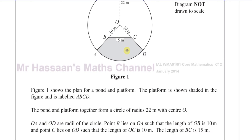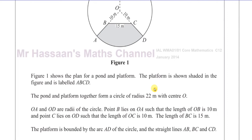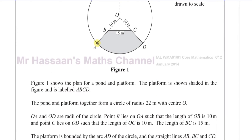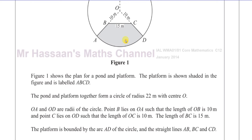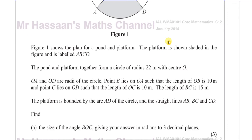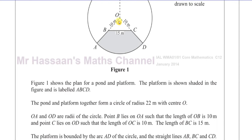Point B lies on OA such that OB is 10 meters, and similarly C on OD such that OC is 10 meters. The length of BC is 15 meters. The platform is bounded by the arc AD of the circle and the straight lines AB, BC, and CD. From that information, first we find the size of angle BOC, giving the answer in radians to three decimal places.